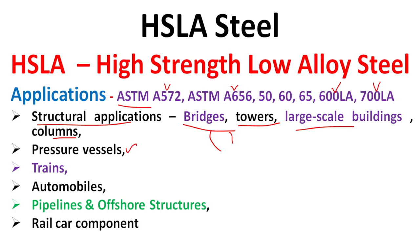Other applications of HSLA steel include pressure vessels, trains, automobile components, pipelines, offshore structures, and rail car components. These represent the broad range of structural and industrial applications of HSLA steel.